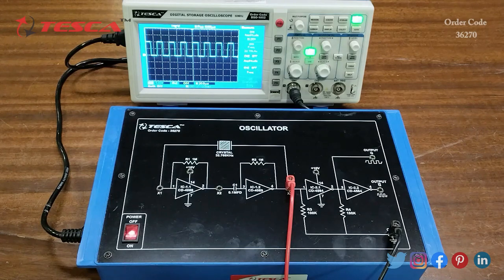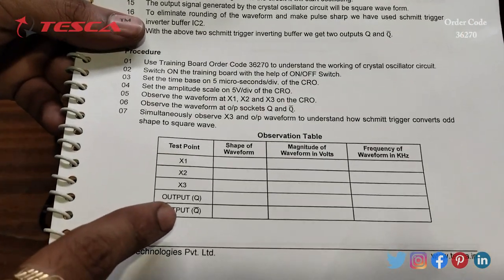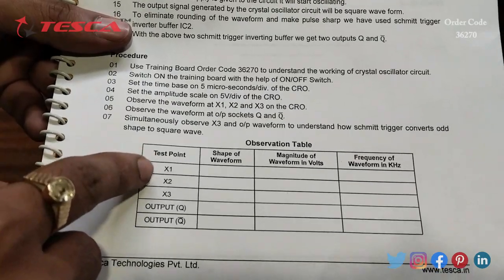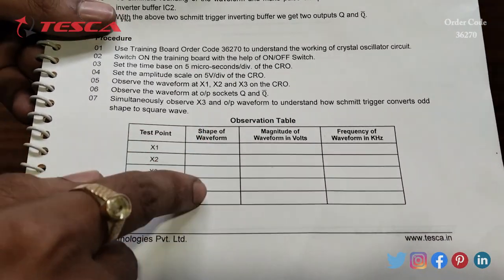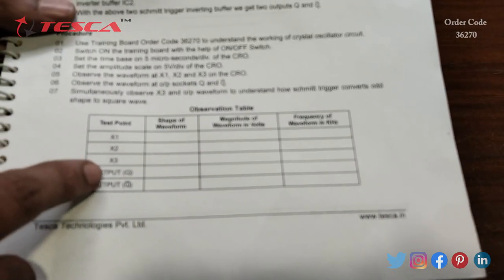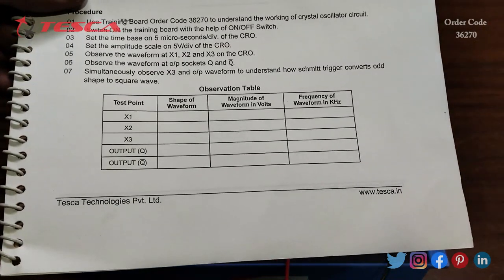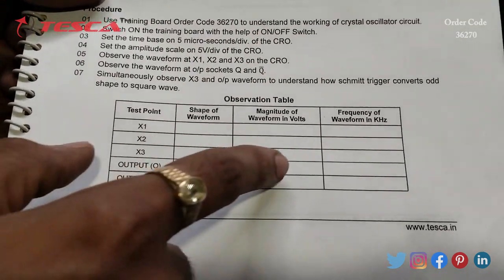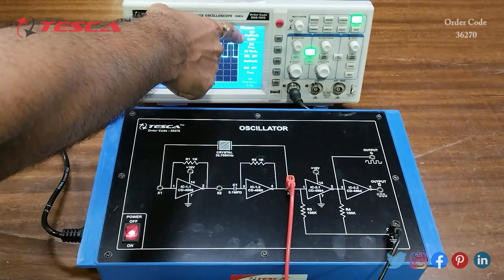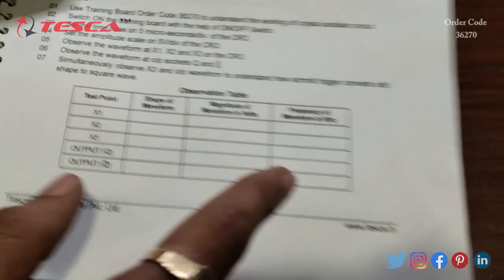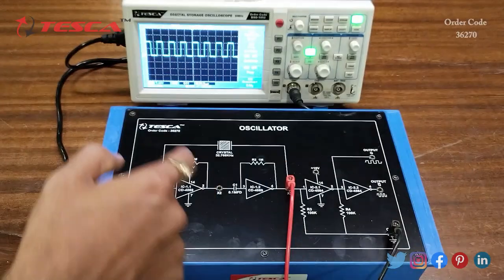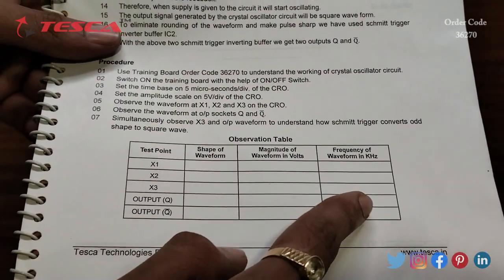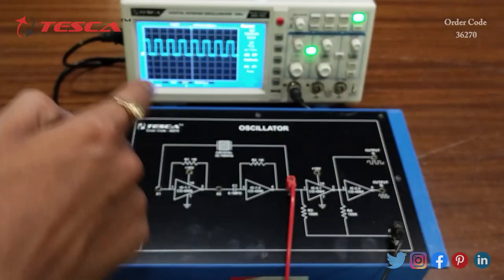This is the observation table mentioned in the manual. We have to observe the waveform of x1, x2, x3, output q, and output q dash, and write the shape of the waveform. For example, at x3 we are getting a square wave, so we write the shape as square. The magnitude of the waveform is 10 volts, and the frequency is approximately 33 kilohertz.